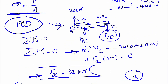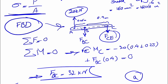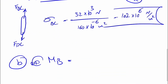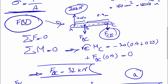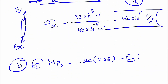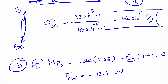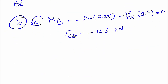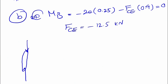Taking moments about point B, counterclockwise positive: the 20 kN force is clockwise, giving −20 × 0.25, and F_CE also produces a clockwise moment, giving −F_CE × 0.4 = 0. Solving gives F_CE = −12.5 kilonewtons. The negative sign means the force is actually in the opposite direction — upward. This means the link is pushing rather than pulling, so link CE is in compression.